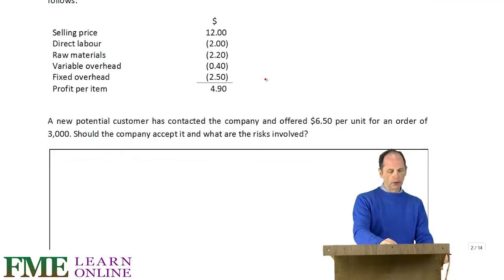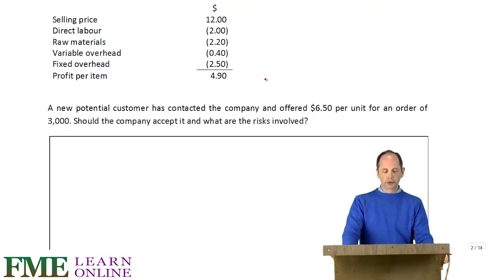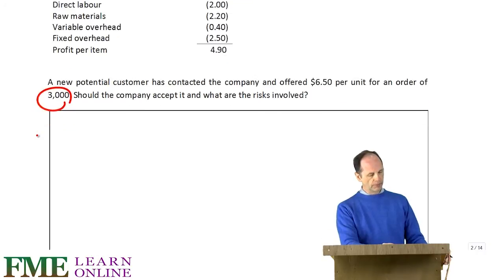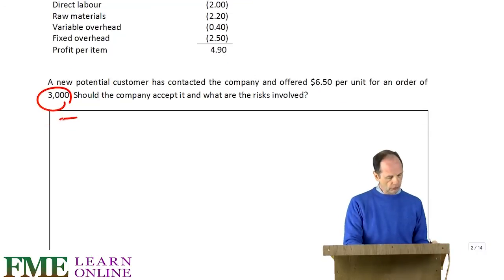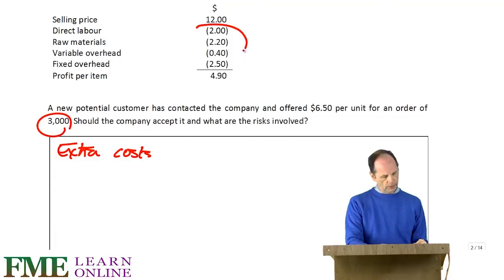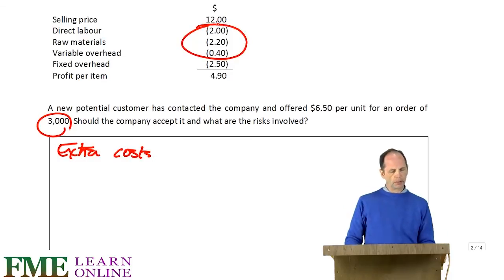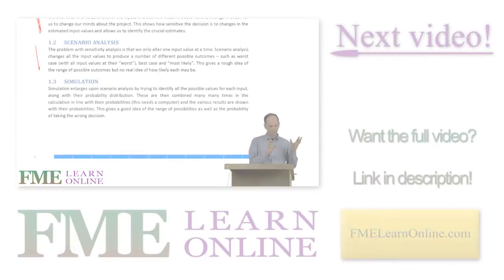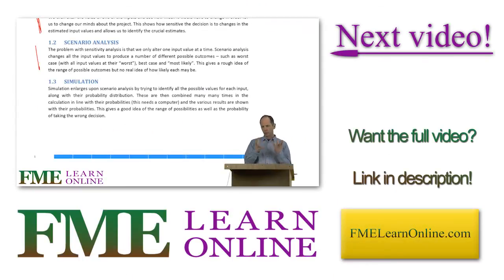A new customer has come along and offered $6.50 for an order of 3,000 units, which can be fulfilled within the spare capacity. The extra costs involved would be the direct labour, raw materials, and variable overhead, which come to $4.60 per unit. So the relevant cost is $4.60, meaning anything above that price would be worthwhile to accept.